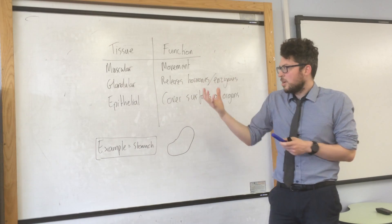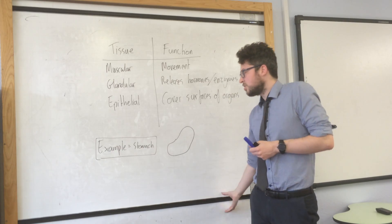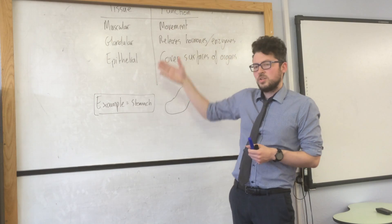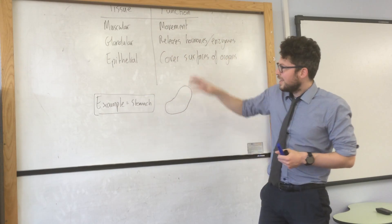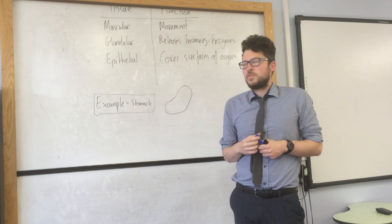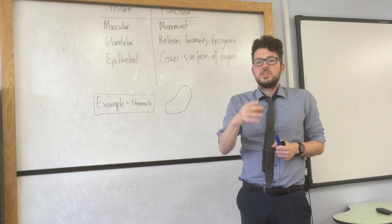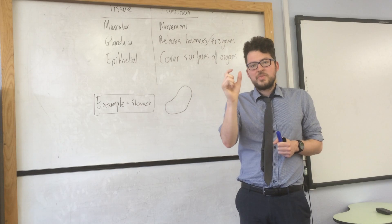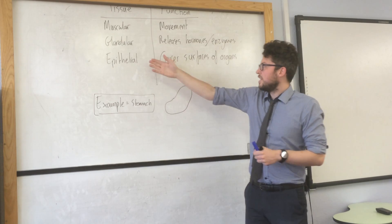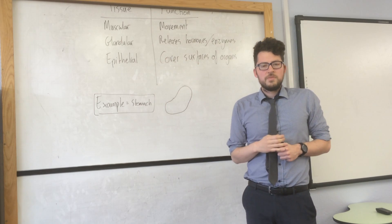Now you need to know how they might be able to work together, and an example given in the specification is the stomach. The stomach has all three of these types of tissue. It has muscular tissue to allow it to churn and break up food. It has glandular tissue to release enzymes to break down that food into smaller molecules. And it has epithelial tissue, which simply covers the surface of the stomach.